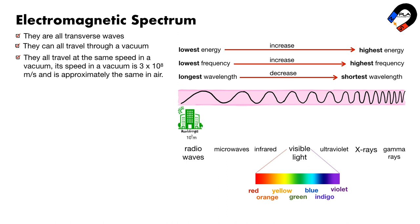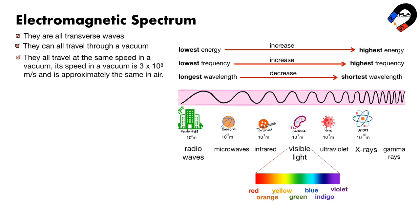The size of the wavelength of radio waves is approximately the size of a building. Microwaves are approximately the size of a baseball. Infrared is approximately the size of a pinpoint. Visible light is approximately the size of bacteria. Ultraviolet is approximately the size of a virus. X-rays are approximately the size of an atom. Gamma rays are approximately the size of subatomic particles.